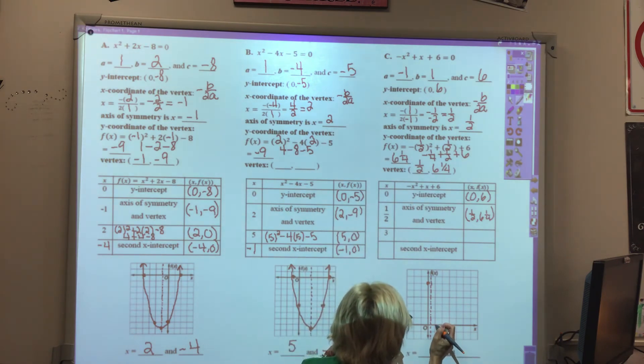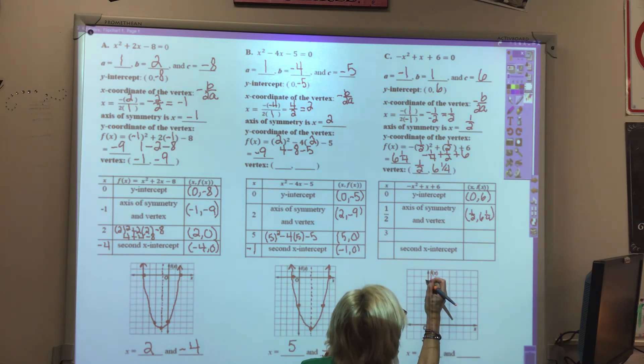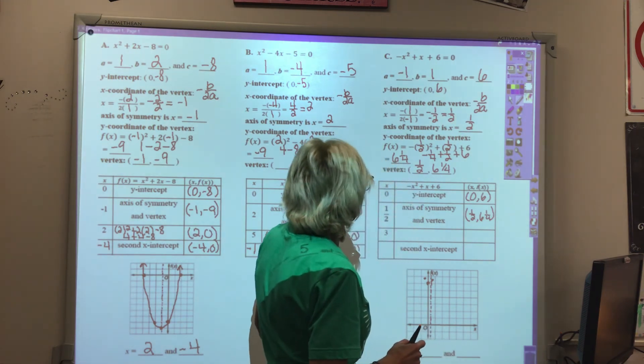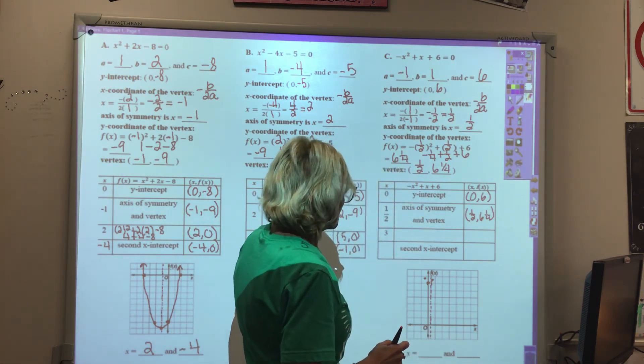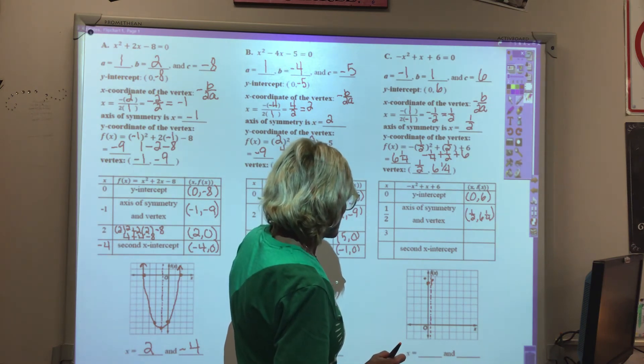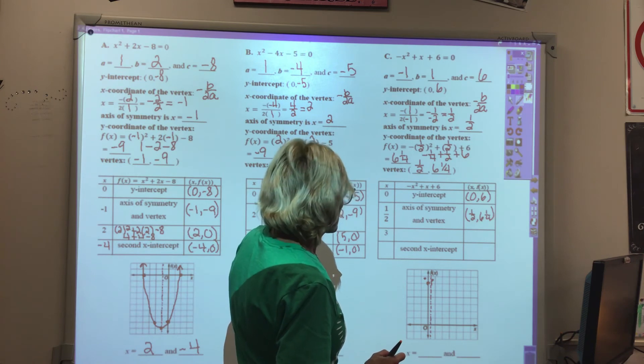Plotting the vertex at 1 half, 6 and 1 fourth. We'd have another point just a little ways past this point. Just imagine those are at the same location, close enough for now.